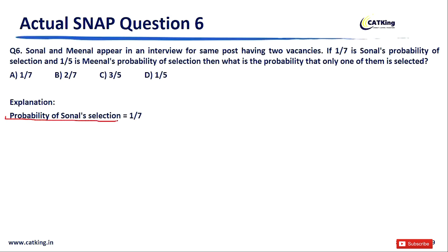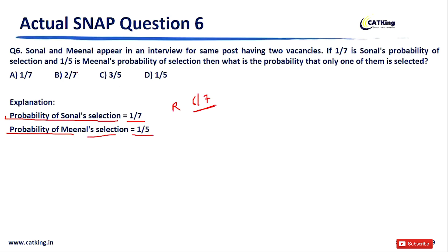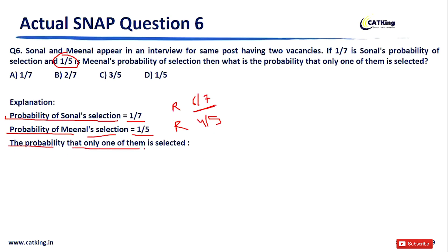From the question: Sonal's probability of selection is 1/7, so Sonal's probability of rejection is 1 − 1/7 = 6/7. Meanel's probability of selection is 1/5, so Meanel's probability of rejection is 1 − 1/5 = 4/5. We need to find the probability that only one of them is selected.